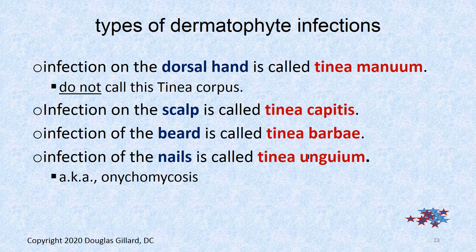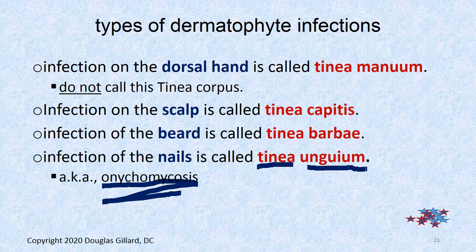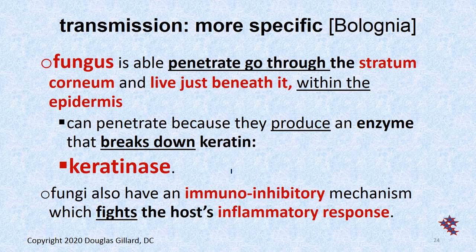Types of dermatophyte infections continued: if it's on the dorsum of the hand, it's called tinea manuum — manum for hand. If it's on the palmar surface of the hand, strangely enough you still call it tinea pedis. If it's on the scalp, which is covered by hair, that's tinea capitis. If it's in the beard region, it's called tinea barbae. If it's in the nails, it's called onychomycosis — probably the most common term — but staying with tinea, you could also call it tinea unguium, aka onychomycosis. These bugs like hard keratin, but they can eat soft keratin as well, as we'll see.